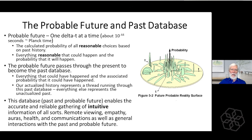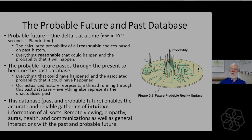This database — past and probable future — enables accurate and reliable gathering of intuitive information of all sorts: remote viewing, auras, health, communication, empathy, and general interactions with the past or probable future. Anyone who explores consciousness will run into this information because it's part of our virtual reality. When the early Hindus encountered it, they gave it a name: they called it the Akashic Records. The Akashic Records are simply a database that must be assembled for the rendering engine to do its job efficiently.